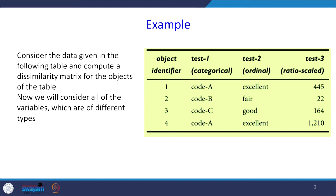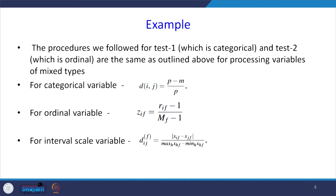Let us take an example — this is a mixed type dataset. Consider the data given in the following table and compute a dissimilarity matrix for the objects of the table. We will consider all variables which are of different types: there are three types — categorical, ordinal, and ratio scaled. When this kind of mixed data type is present, how do we use it for finding the dissimilarity matrix and giving it as input for cluster analysis?